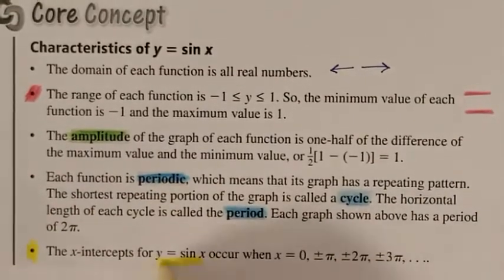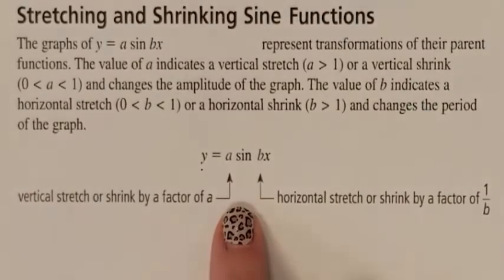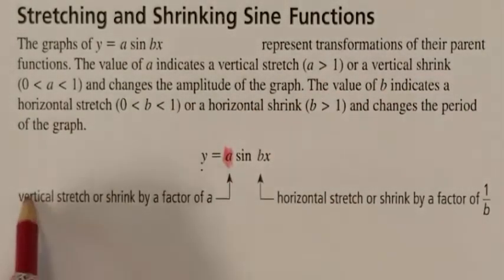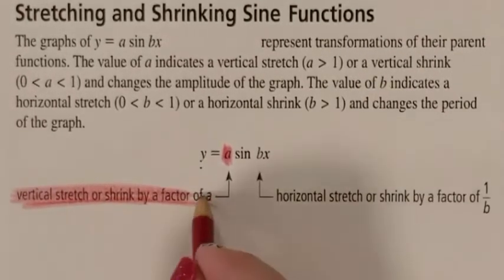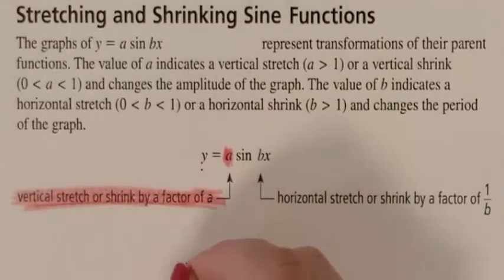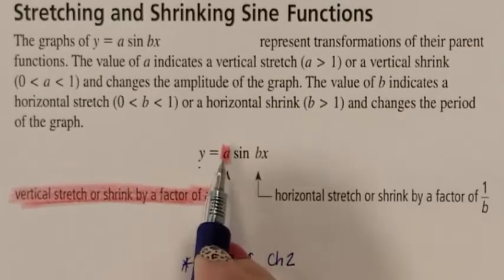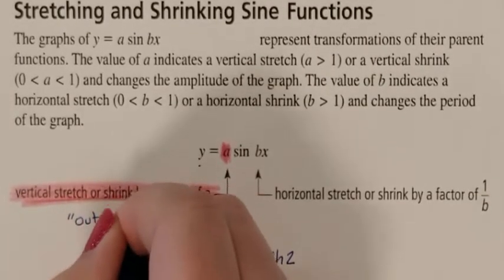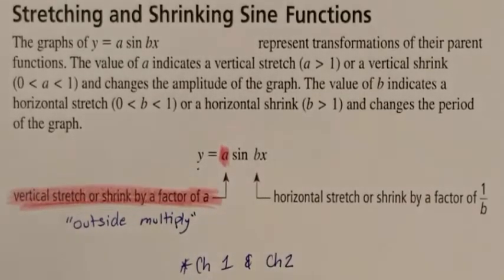When we are graphing our sine, you need to be familiar with the variable that's in front of the word sine. That A is going to represent our vertical stretch and our vertical shrink. You should already be familiar with this from chapters 1 and 2. This was an outside multiply. We remember that our outside multiplies are our vertical stretches and shrinks.